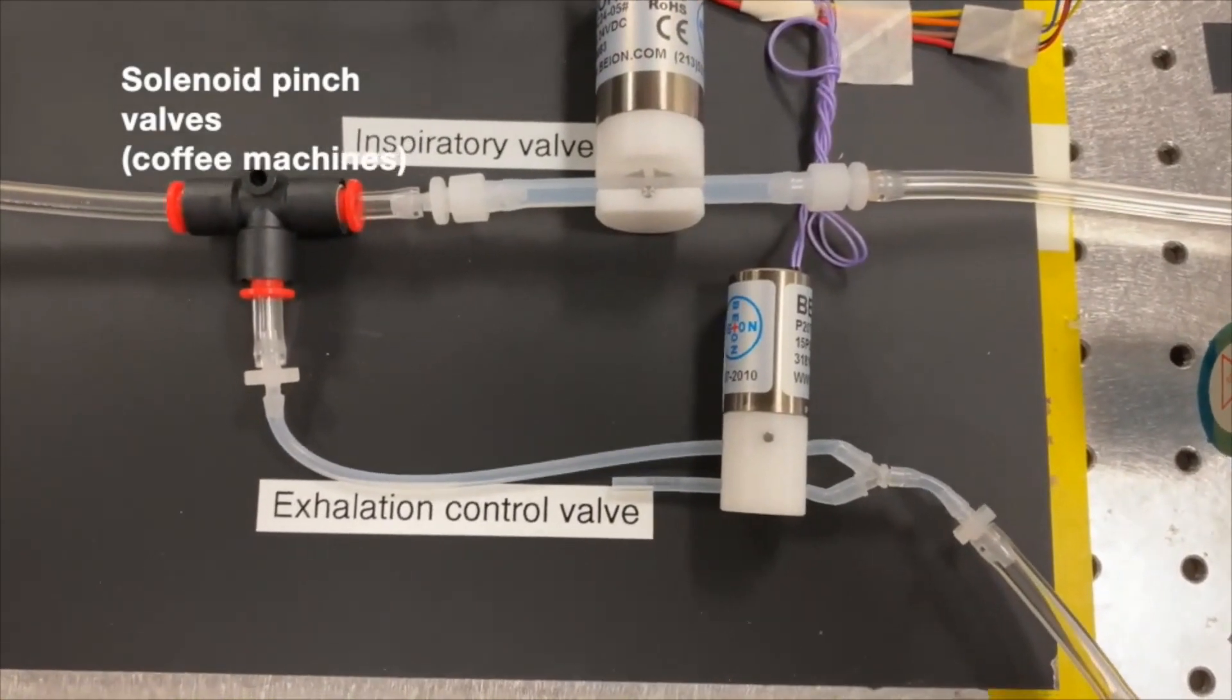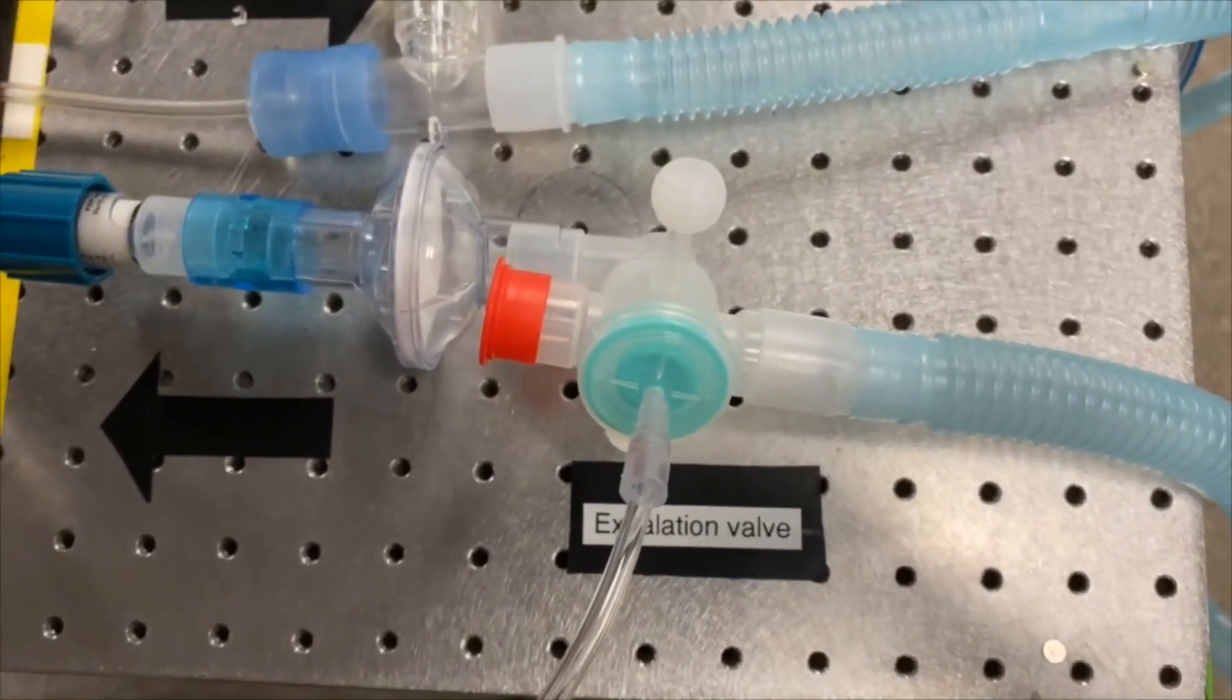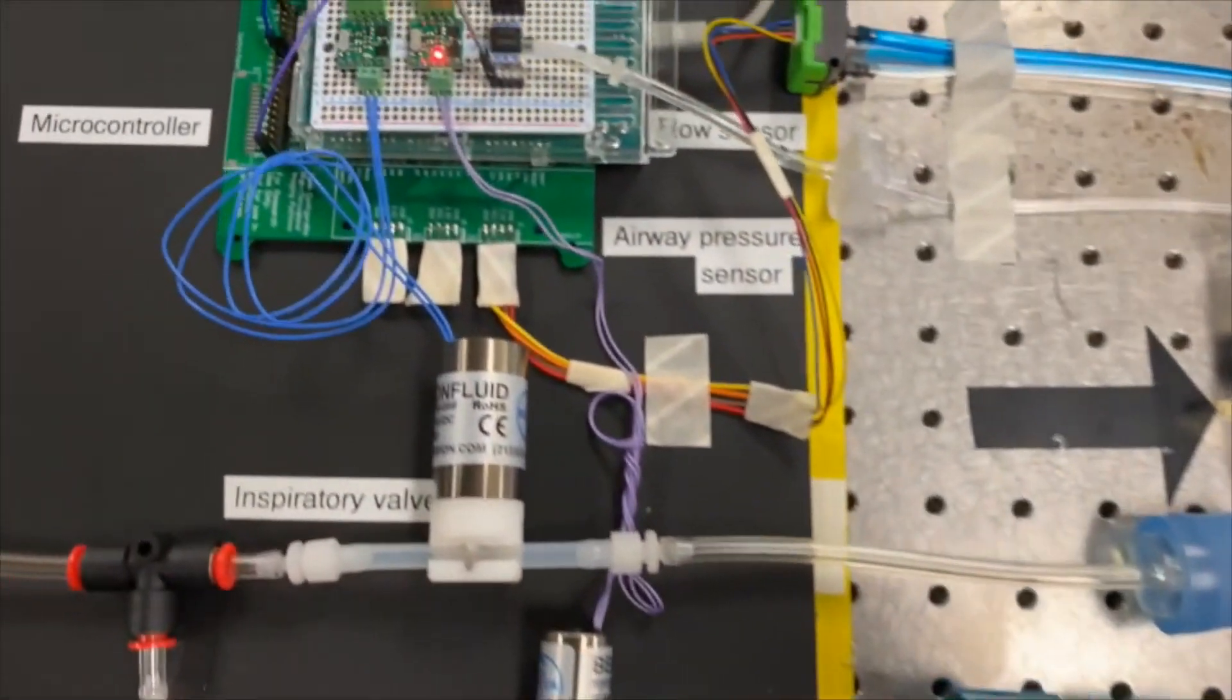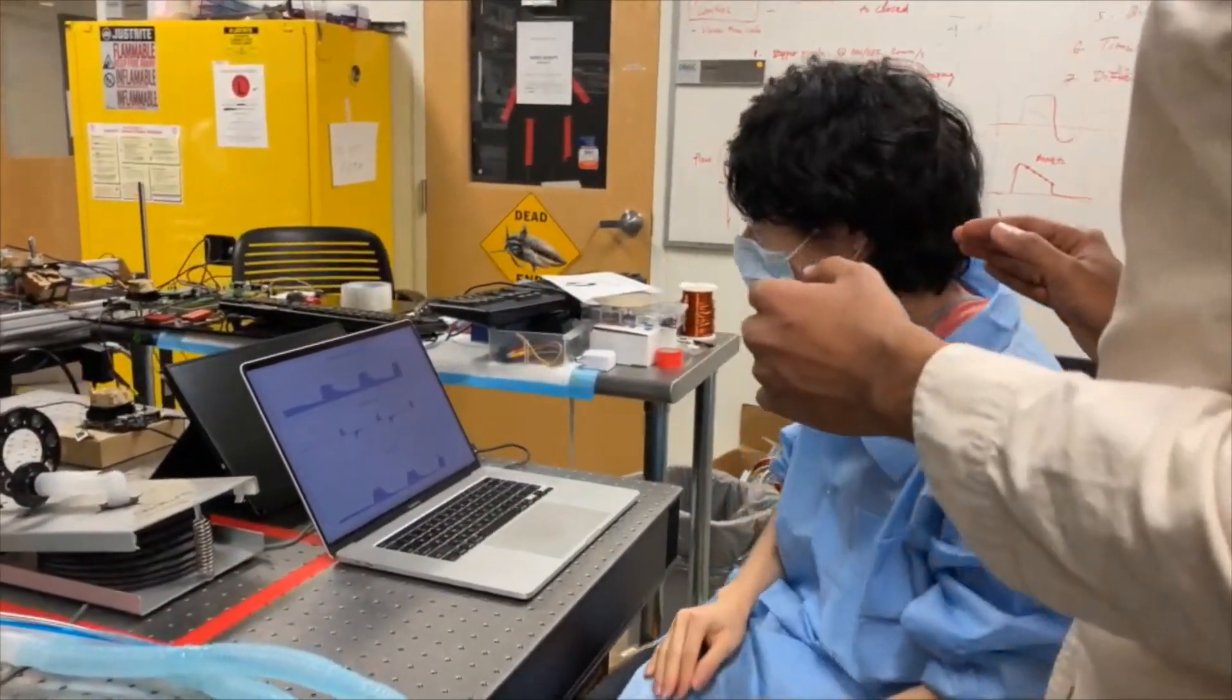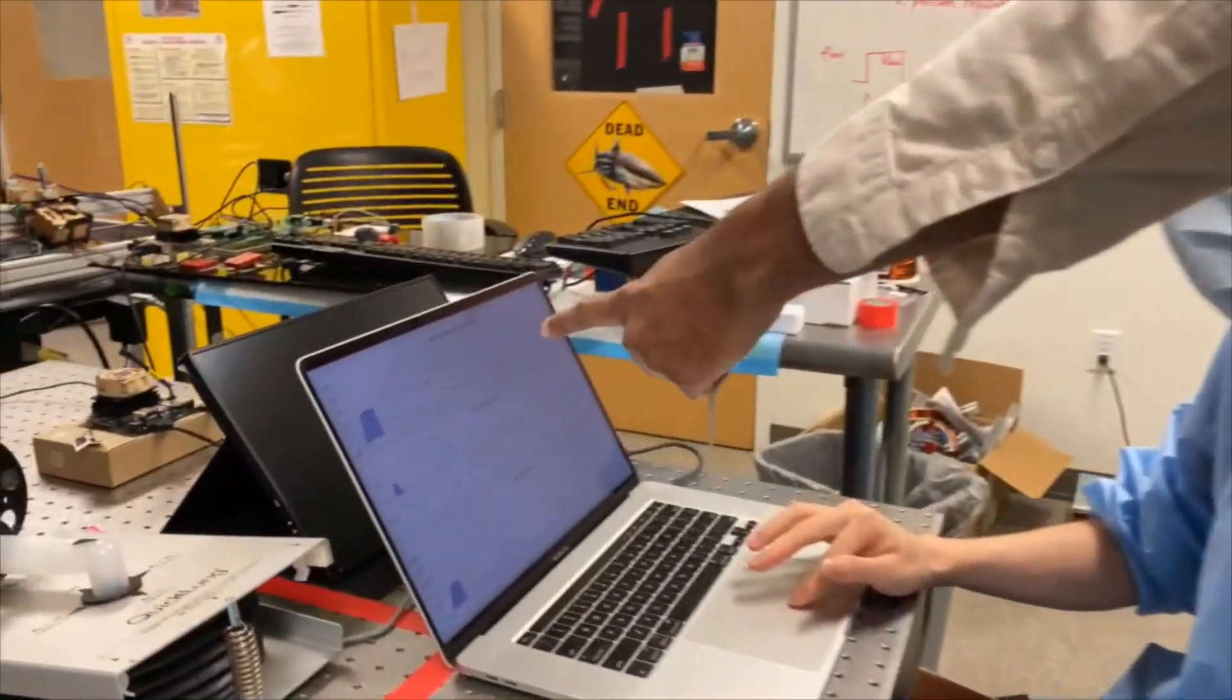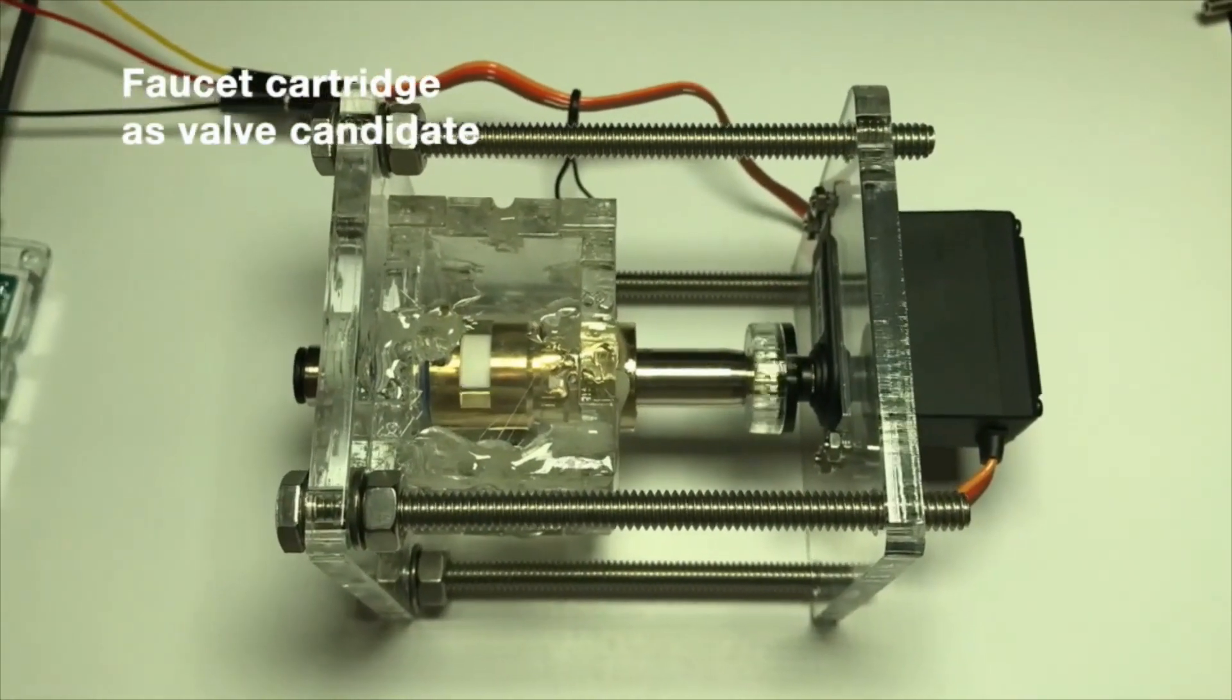As a group who thinks about frugal science, we started looking at what other industries might have parts that we could build ventilators out of. An inspiration struck when we realized that we could borrow parts from automated coffee machines, the actuators that go into moving your car seat, all the way to the faucet valves that go inside whenever you turn the water in your basin on and off.